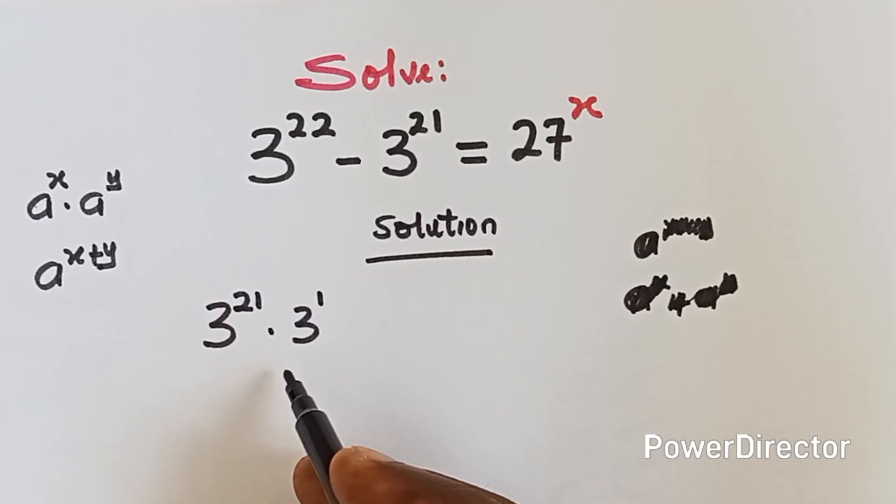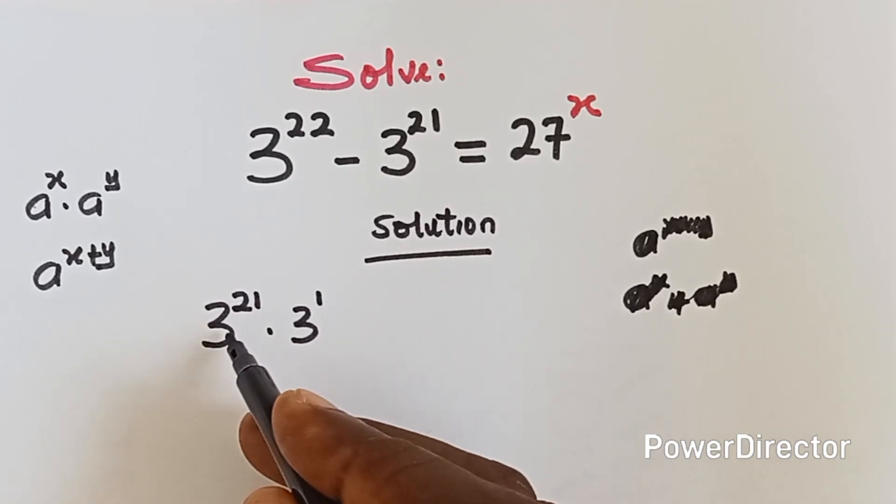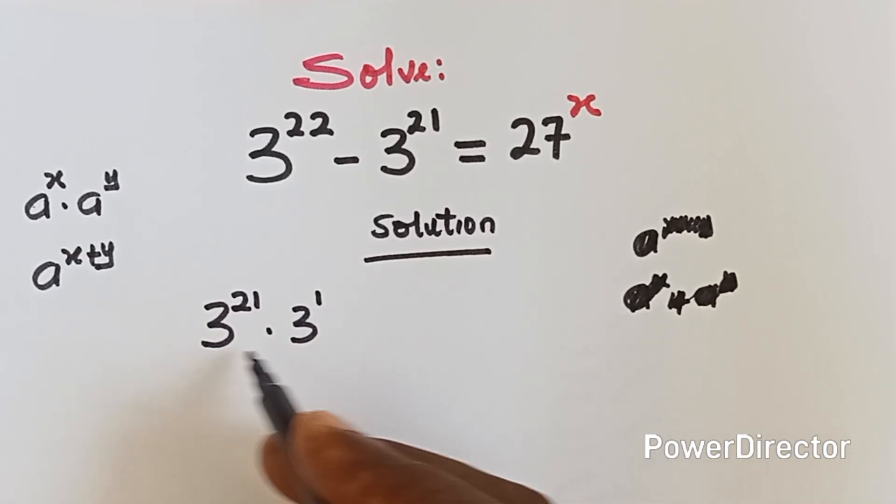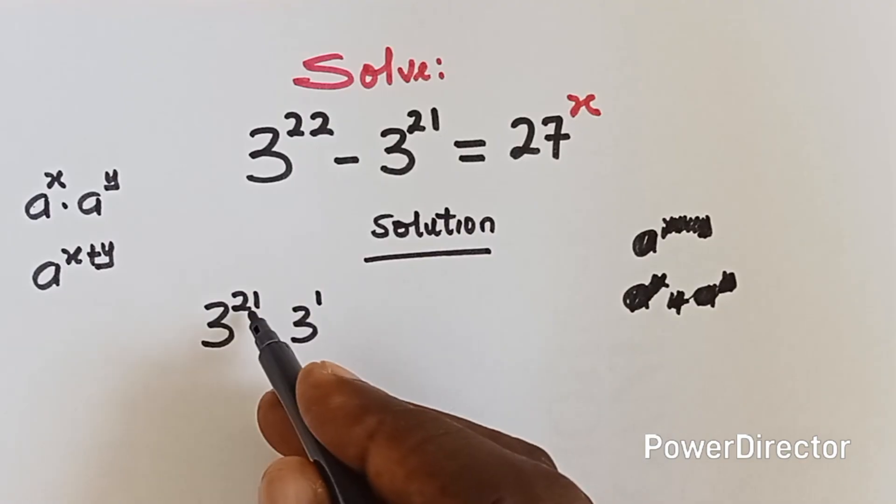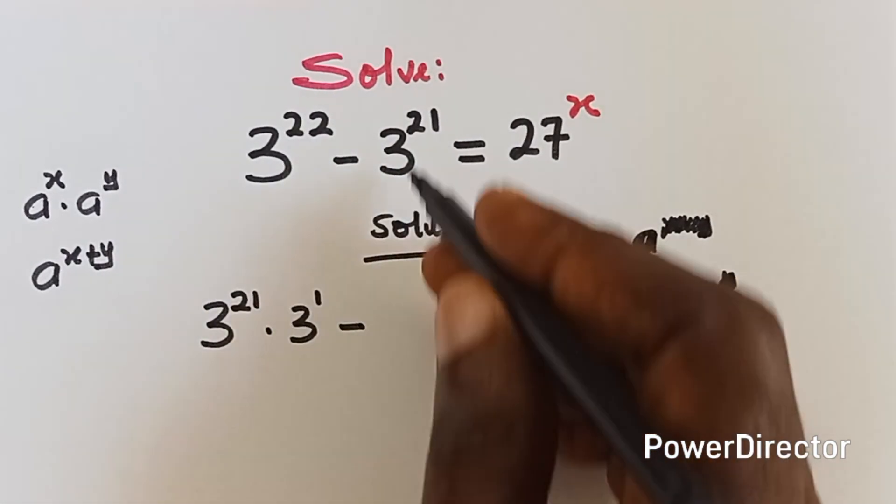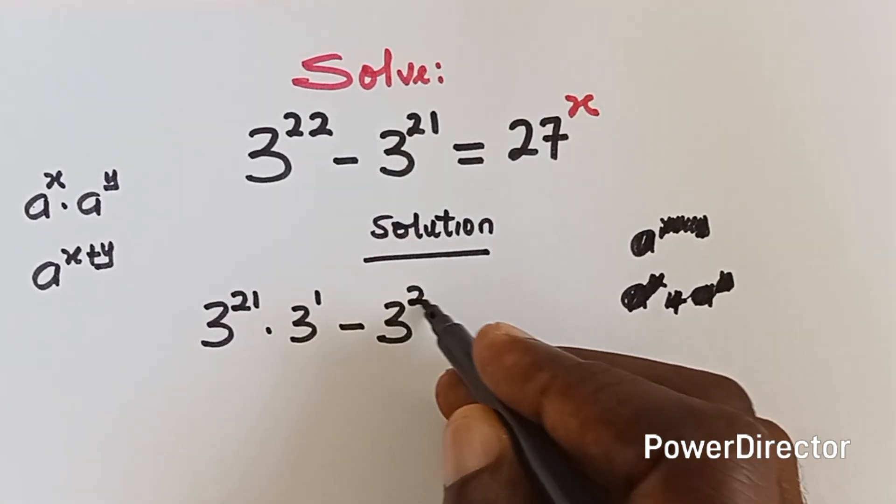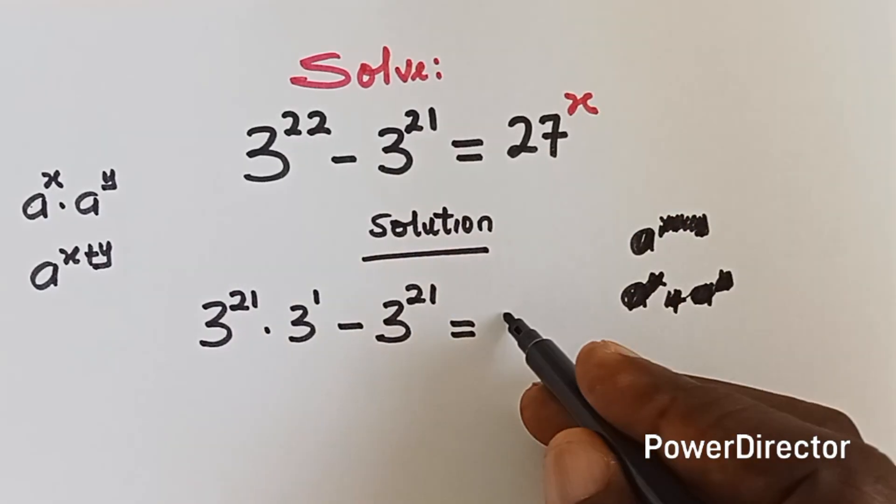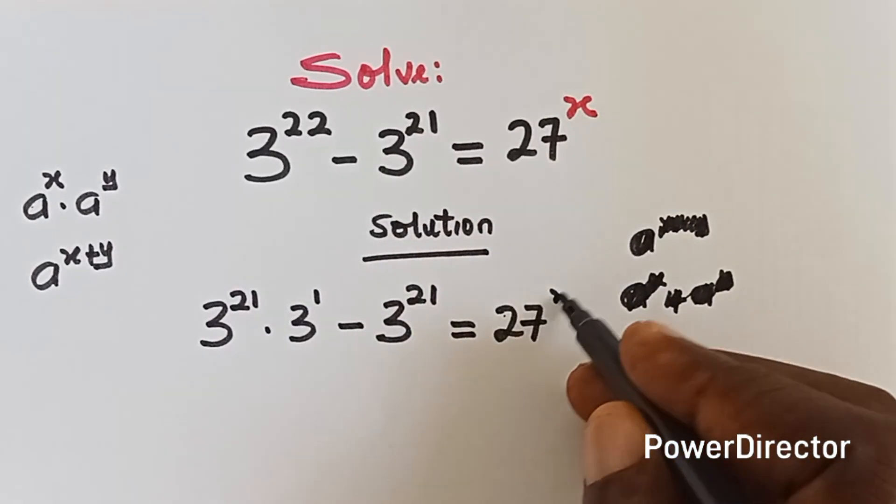Okay, so that is what I'm applying there because when you pick the base, which is 3, then you can add the power. 21 plus 1 will give us 22 minus, I'll write this, 3 raised to power 21 equals to 27 raised to power x.